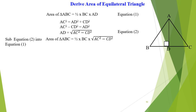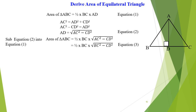Then we substitute equation 2 into equation 1. The area of triangle ABC will be equal to half times BC times the square root of AC squared minus CD squared. Let's try to make all terms the same — let's express every term in terms of BC.